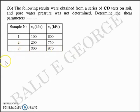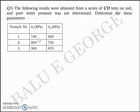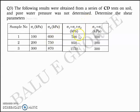For each sample, you apply sigma C as the confining water pressure (sigma 3), let it go through the consolidation stage, and then apply a deviator stress sigma D at the top. To arrive at the shear parameters, you need sigma 1 and sigma 3. Sigma 3 is directly equal to sigma C. To get sigma 1, the major principal stress, you add sigma C and sigma D. For sample 1: sigma 3 = 100 and sigma 1 = 100 + 600 = 700 kilopascal.